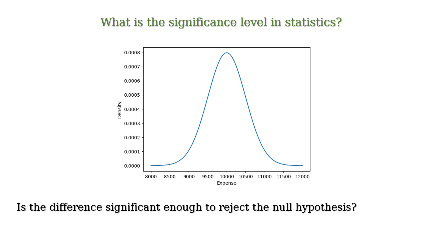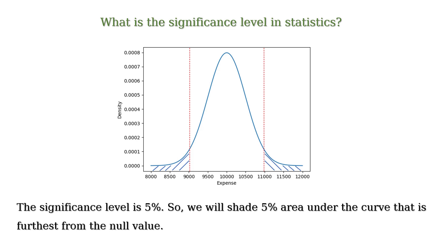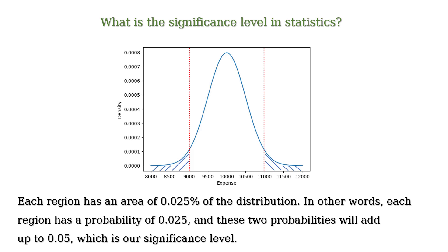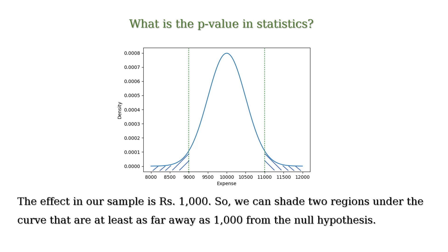But is the difference significant enough to reject the null hypothesis? With a significance level of 5%, we shade 5% of the area under the curve that is farthest from the null value. As the curve is symmetric and this is a two-tailed test, we get two regions farthest from the null value, each with an area of 2.5% of the distribution. Since the effect in our sample is Rs 1,000, we shade two regions under the curve at least as far away as Rs 1,000 from the null hypothesis.